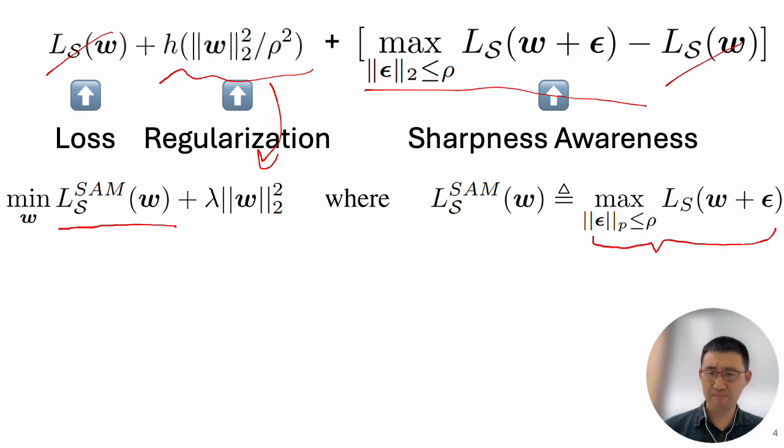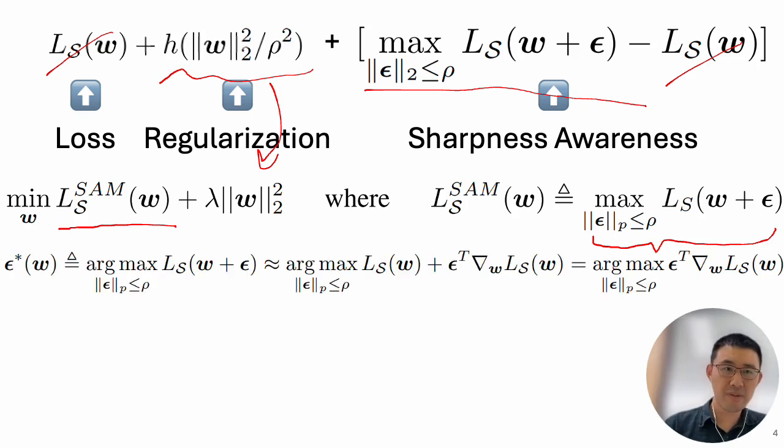And we're essentially minimizing this term, which is over here. And we're saying, well, this term is just maximization of the impact of a perturbation that could happen. So it's a max. How do we solve that?